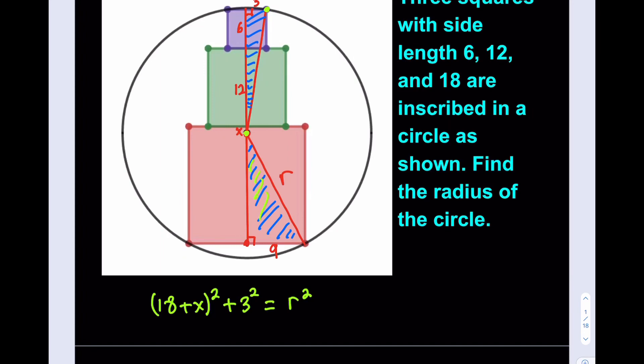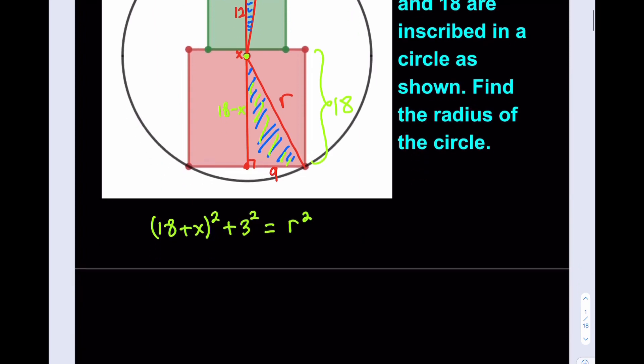Let's go ahead and write that down. What is the other equation? It comes from this triangle. The height, what is the height for this triangle? This is 18, but we have to take out that little tiny piece X. So this is going to be 18 minus X. The height of the bottom triangle is going to be 18 minus X. The base is going to be 9. So we write 18 minus X quantity squared plus 9 squared is equal to R squared.